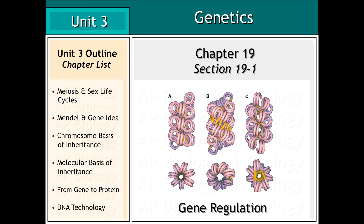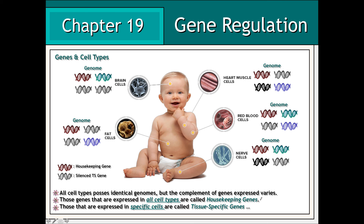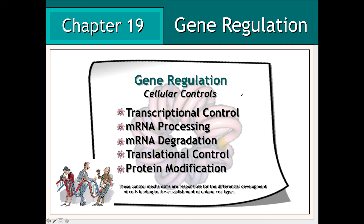In chapter 19, we're going to be taking a look at how the eukaryotic genome is regulated. Although all cells in the human body possess the exact same genome, the types of genes expressed in a cell type varies. Genes expressed in all cell types are commonly referred to as housekeeping genes, whereas those expressed in specific cells and responsible for the characteristics that typify a specific cell type are known as tissue-specific genes.